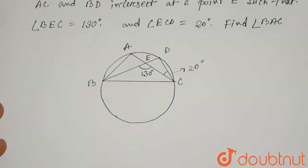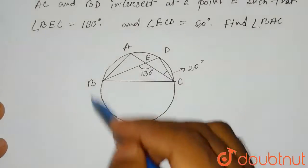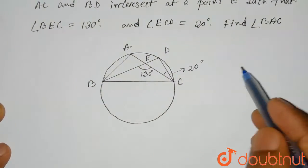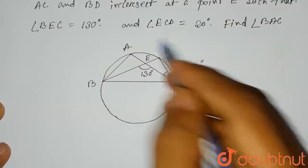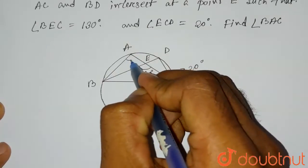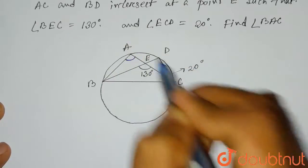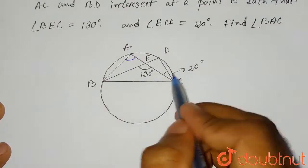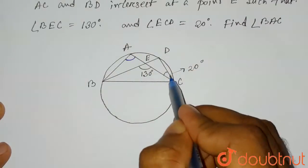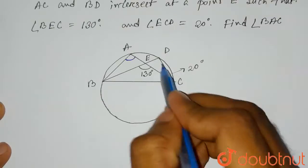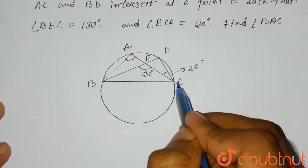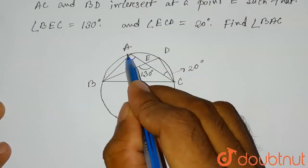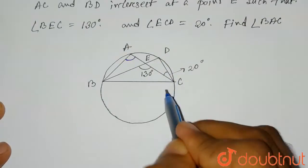So this is the diagram given to us. This is the circle. We have to find the angle BAC — that means we have to find this angle. So here, the angle DCA, or you can say ACD, is given as 20 degrees.